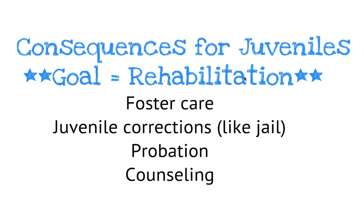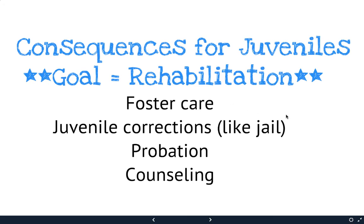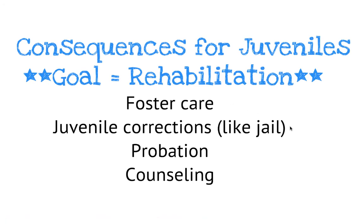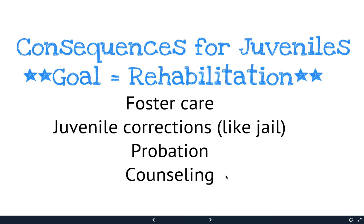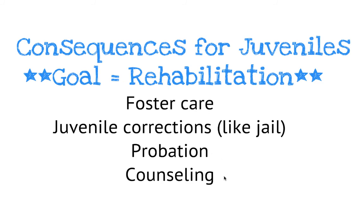Here are the consequences for juveniles. The goal for juvenile punishment is rehabilitation. In the judicial system, they do not want juveniles to be punished, but rather rehabilitated to go on and have a second chance to be a productive member of society. Some consequences: you might be taken away from your parents and put in foster care, put in a juvenile correction facility — which is like jail but limited to juveniles with no adults — put on probation, or required to seek counseling. None of these are super punitive; the goal is to rehabilitate.